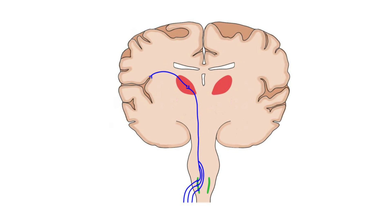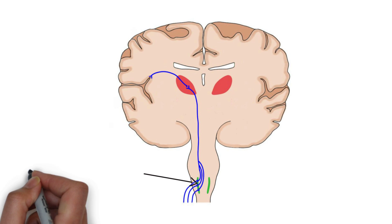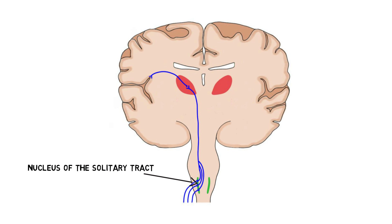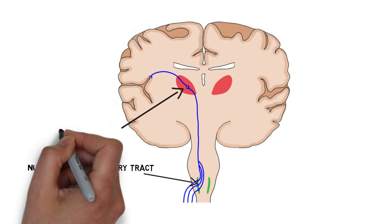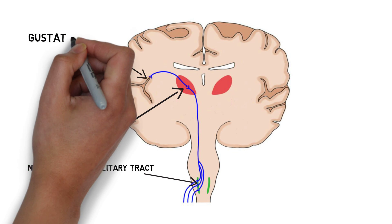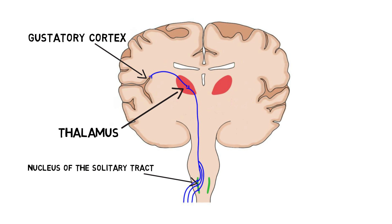These neurons terminate on neurons in the nucleus of the solitary tract in the medulla. From there, taste information is sent to the thalamus. Then, taste information is sent to the gustatory cortex, which is a region of the cerebral cortex found along the border between the anterior insula and a structure called the frontal operculum.